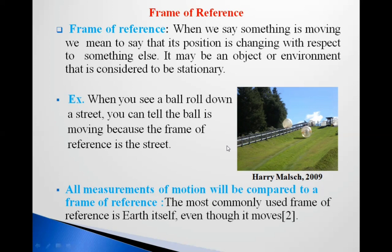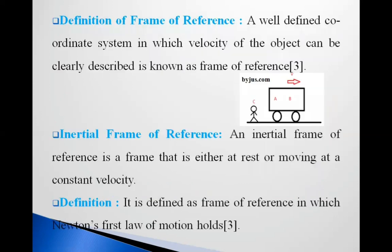Earth is treated and used as a frame of reference, though it is in motion. A well-defined coordinate system in which the velocity of an object can be clearly described is known as a frame of reference.